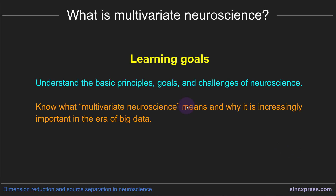In this video I'm going to introduce you to the basic principles and goals of neuroscience. I'll talk about multivariate neuroscience, why it is increasingly important, and why it is becoming such a challenge to analyze all the data that multivariate neuroscience is producing.